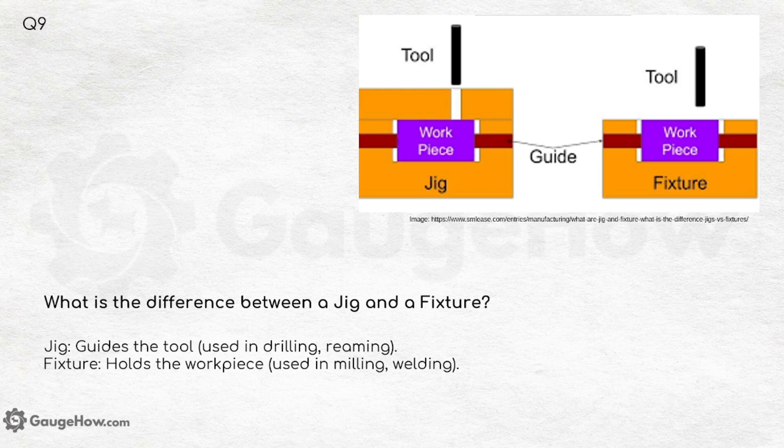What is the difference between a jig and a fixture? A jig guides the tool — used in drilling and trimming — while a fixture holds the workpiece, which is used in milling and welding.